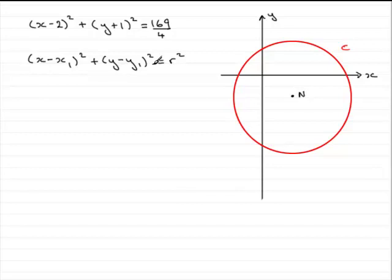And so when you compare this form of the equation of a circle to what you've got up here, you can see that the center n has coordinates 2 for x₁, and the y₁ coordinate has to be negative 1. So the center then n is at (2, -1). And that was part A.